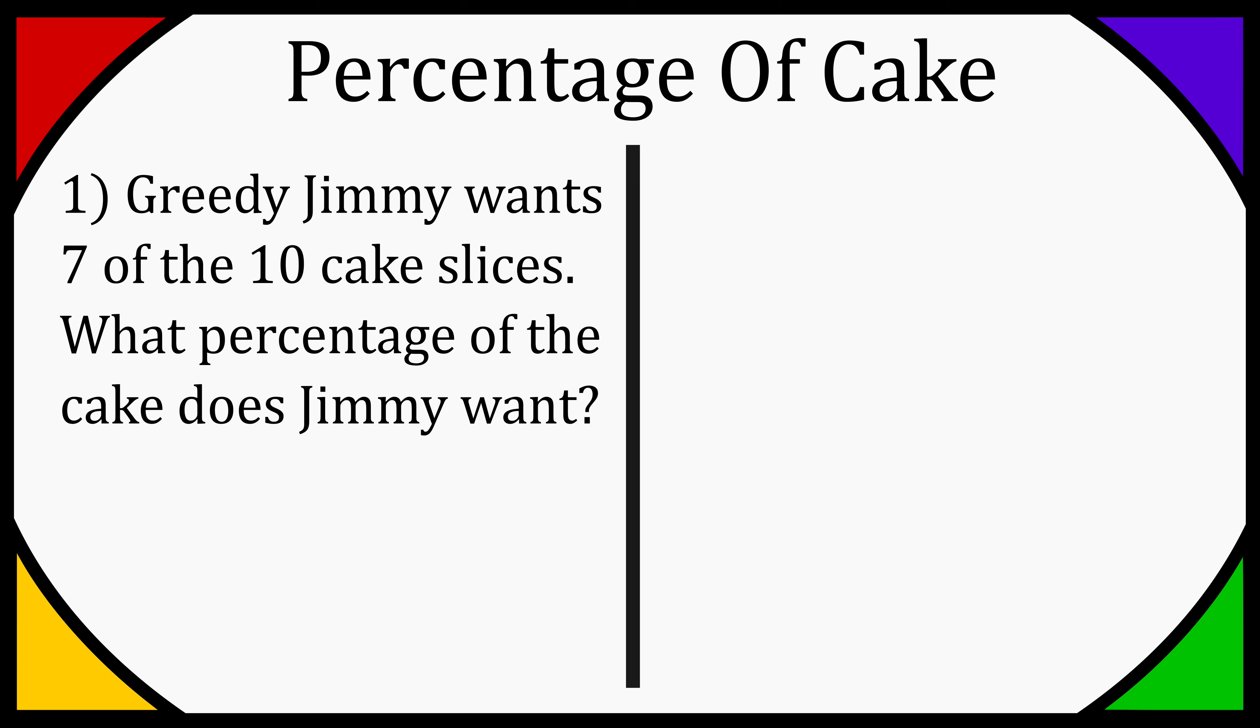So there's 10 slices overall, so that's going to be on the bottom, that's going to be our denominator, and on the top we're going to put seven because Jimmy wants seven of them, so he wants seven of the 10 cake slices. Great, so that's going to be our fraction.